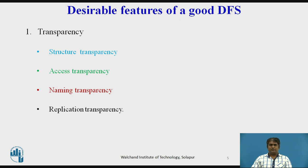A good distributed file system should have several features. The first is transparency, of which there are four types. Structure transparency: for performance, scalability, and reliability reasons, a distributed file system normally uses multiple file servers. Each file server is a user process and a kernel process responsible for controlling a set of secondary storage devices on its node. The multiplicity of file servers should be transparent to the clients. Access transparency: both local and remote files should be accessible in the same way. The interface should not distinguish between local and remote files, and the system should automatically locate, access, and arrange for the transport of data to the client side.